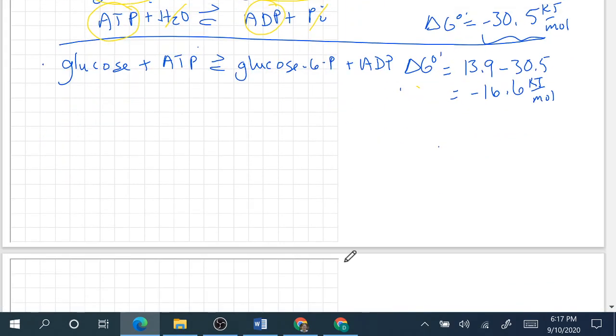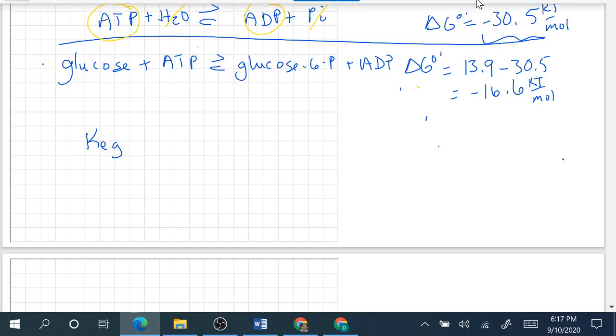Now we can calculate the Keq from that other equation. Keq is equal to e to the negative delta G naught prime over RT.